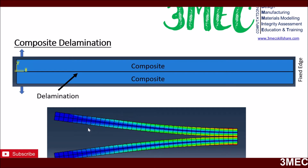There are many different approaches to this. You can use VCCT — Virtual Crack Closure Technique — in Abaqus, where you define the interface as a contact property and then use VCCT to define a criteria for when your crack will open as the deformation progresses. The second approach is the cohesive modeling approach, which I am going to use in this short tutorial.